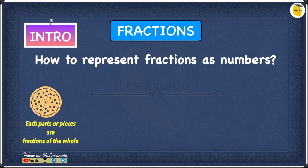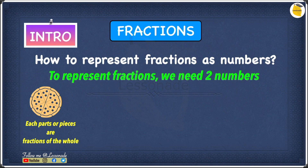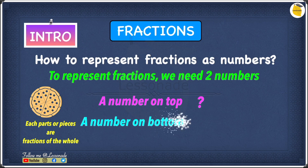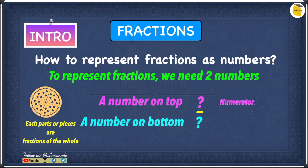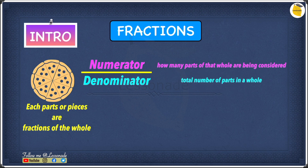Now let's look at how to represent fractions as numbers. To represent fractions we need two numbers: a number on the top and a number on the bottom, separated by a line through the middle. The number at the top is called the numerator and the number at the bottom is called the denominator. The numerator tells us how many parts of the whole are being considered, and the denominator tells us the total number of parts in a whole.